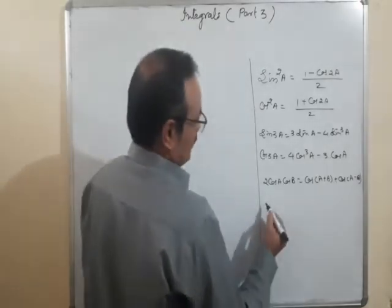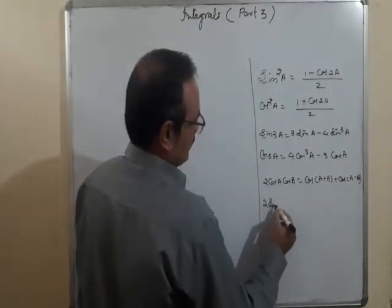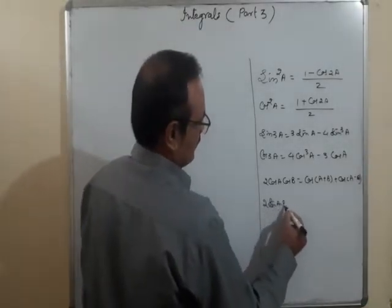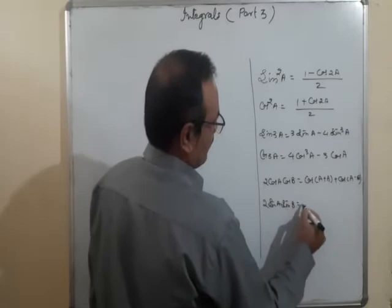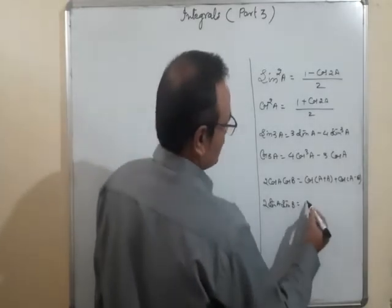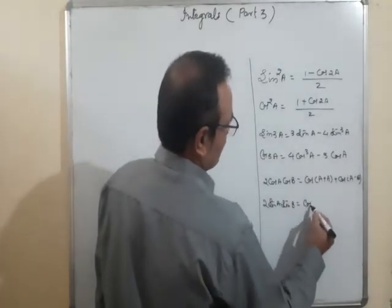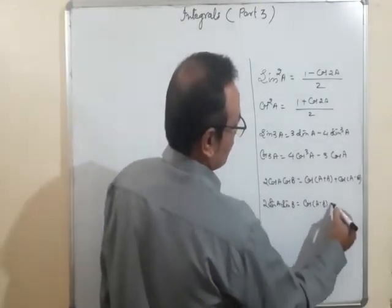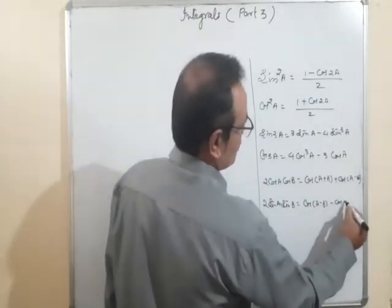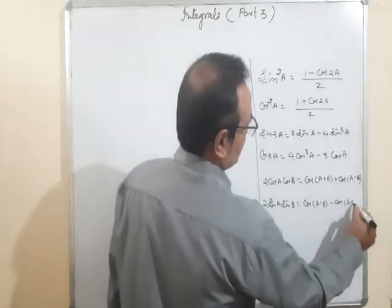If you have sin3A, it equals 3sinA − 4sin³A. And cos3A equals 4cos³A − 3cosA. One property that is heavily used: 2cosA·cosB = cos(A+B) + cos(A−B).